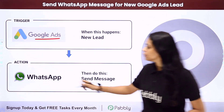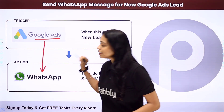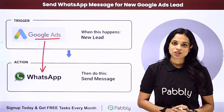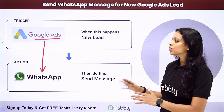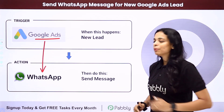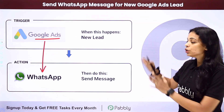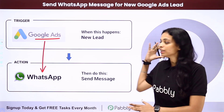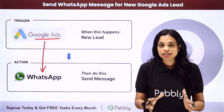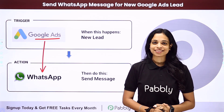For this you will have to set up some integration between Google Ads and WhatsApp, and the same thing can be done using Pabbly Connect software. Here your trigger application would be Google Ads and your action application would be WhatsApp. Now let me show you how to integrate and automate this entire process yourself.